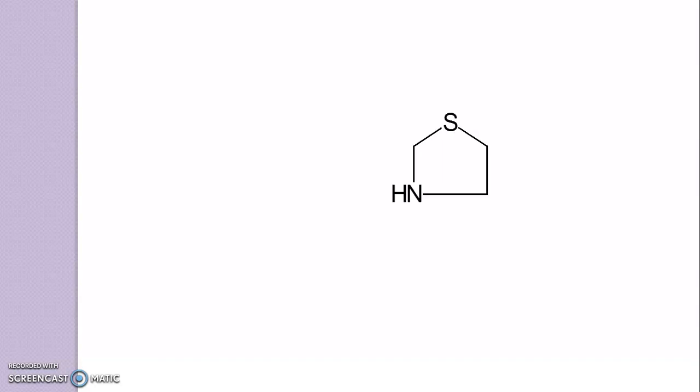For drawing the penicillin structure, first of all, you have to draw a cyclopentene ring. Then, you have to introduce a heteroatom — sulfur and nitrogen — which are in 1,3 positions to each other. Then, you have to draw a lactam ring to this. So, the formed structure is of penam. So, this is a penam ring structure.